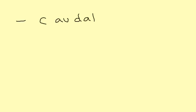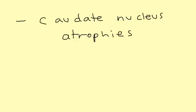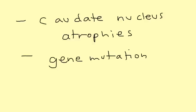What is being affected in Huntington's? It is a part of the brain known as the caudate nucleus, and it atrophies. What's happening is you have a gene mutation, and that gene mutation is what Huntington's disease results from.